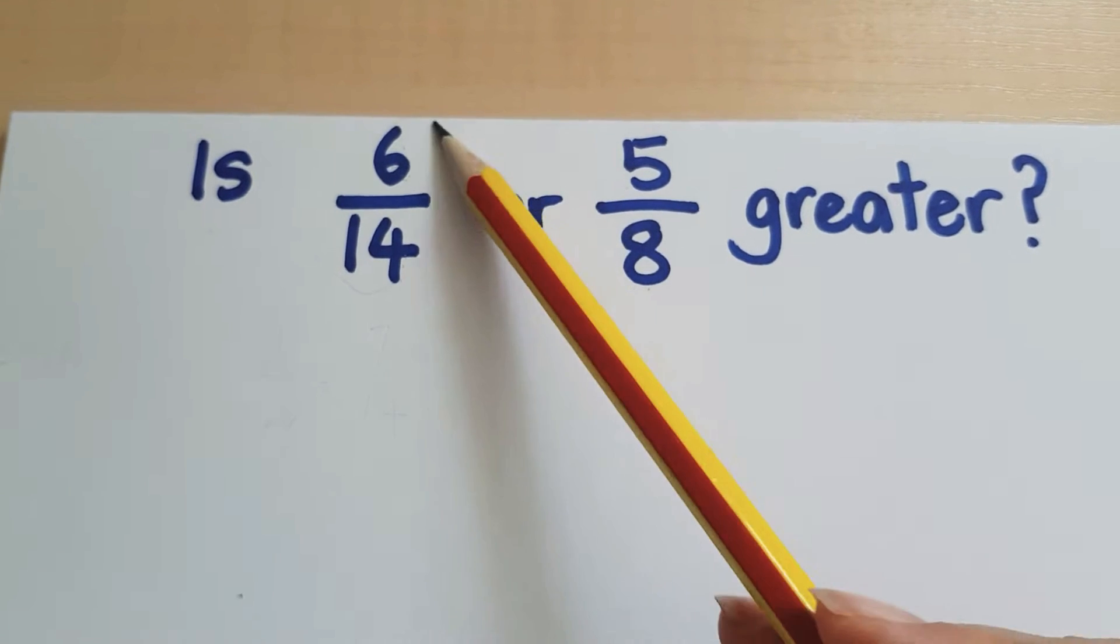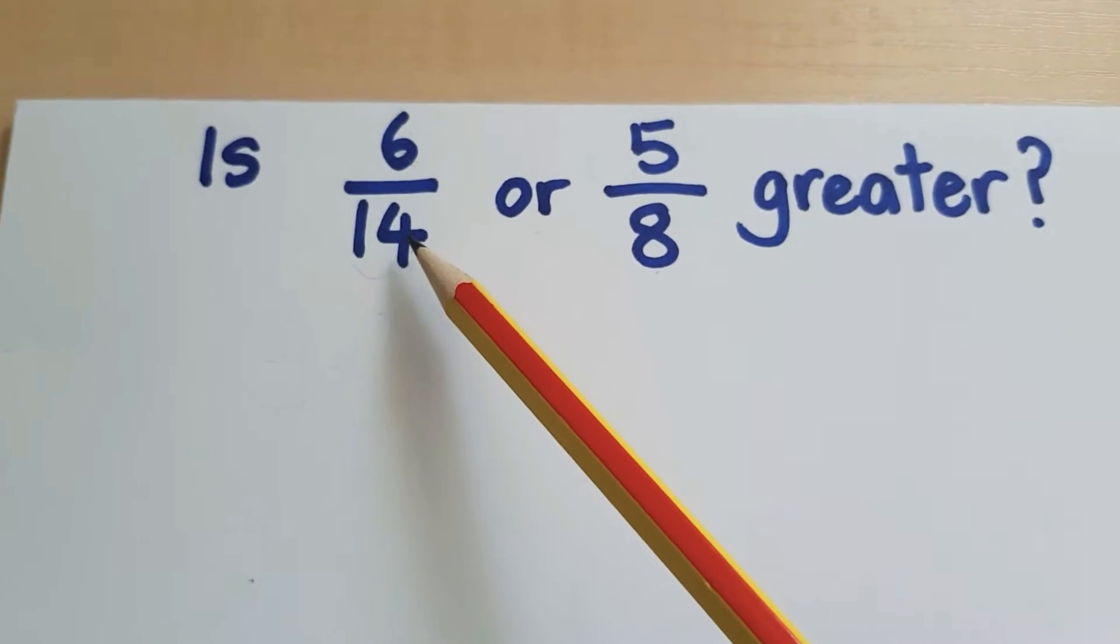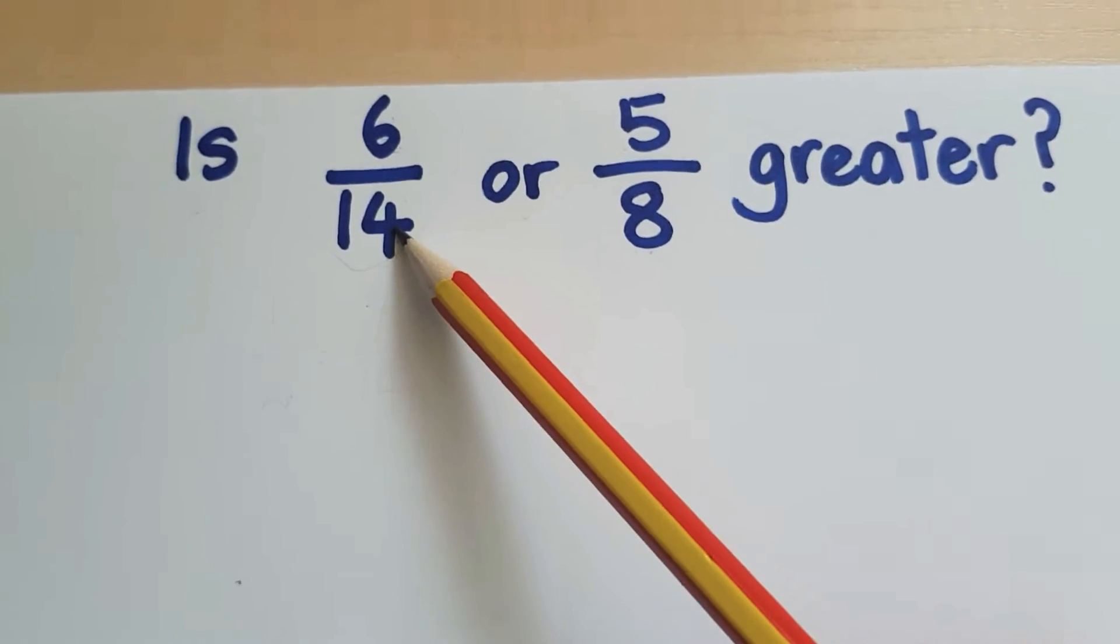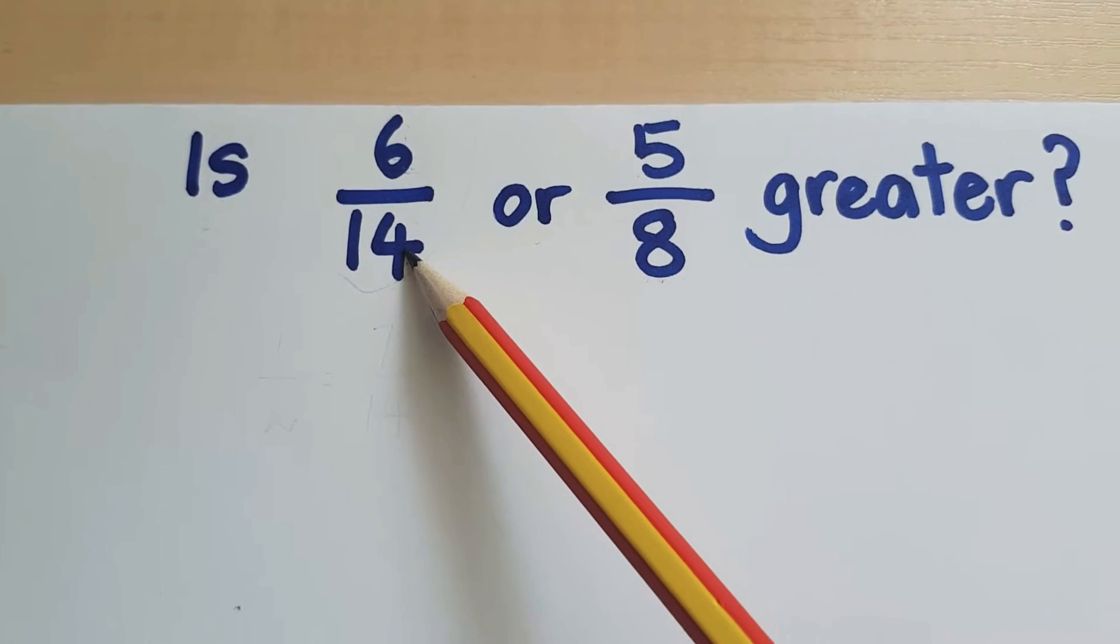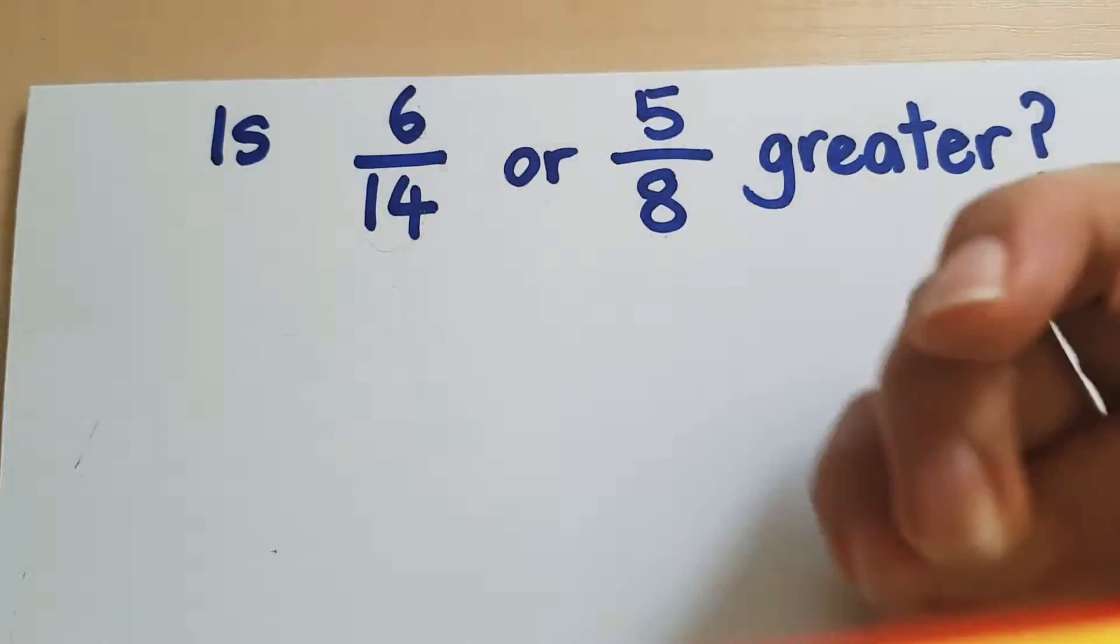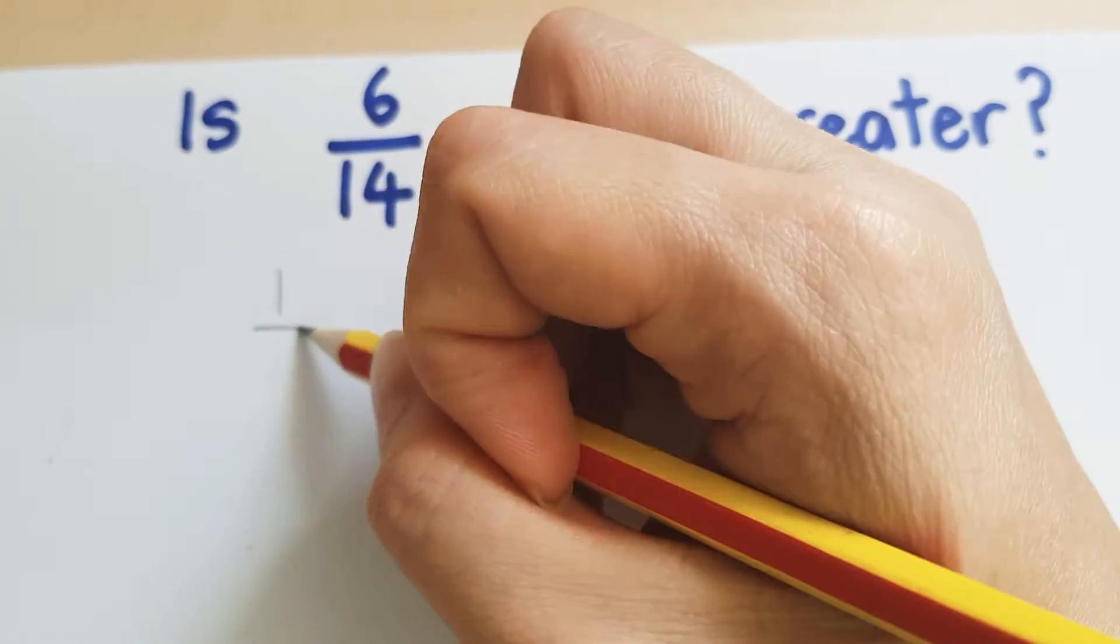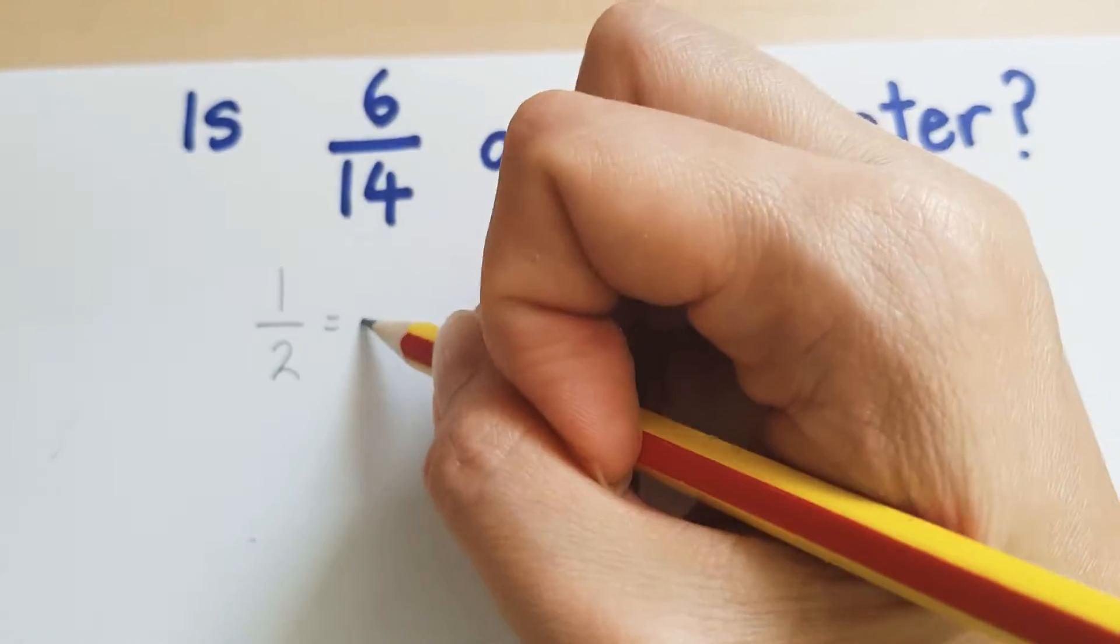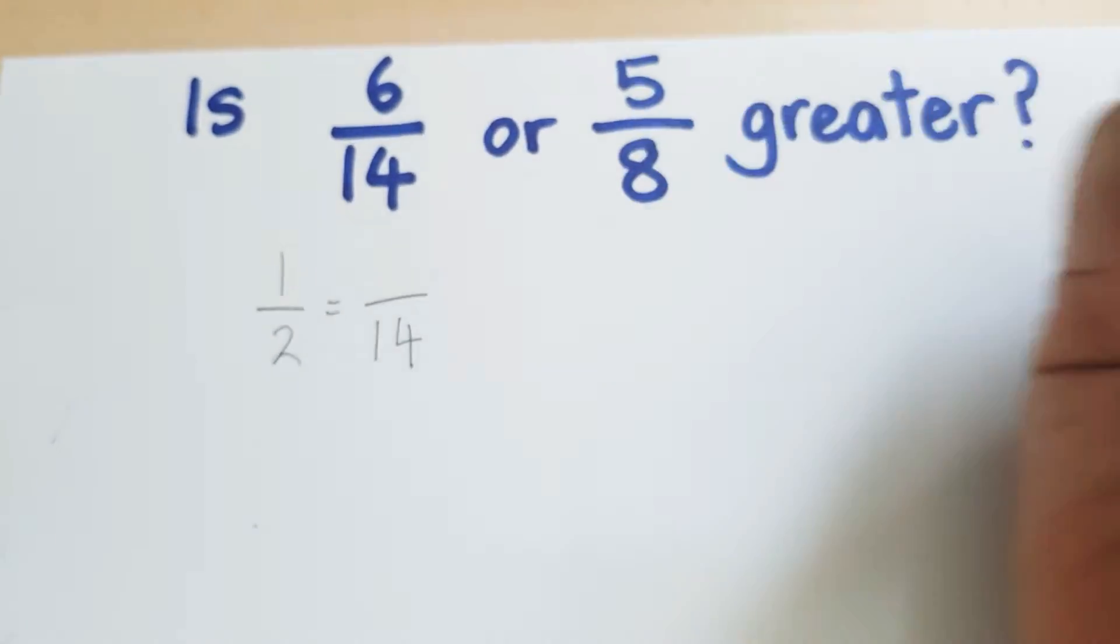Now let's look at the first fraction. I'm comparing this to half. I'm going to look at the denominator, 14. A denominator of 14 means that the whole is cut into 14 equal parts. I want to know if I have 14 equal parts, what would be equivalent to half?